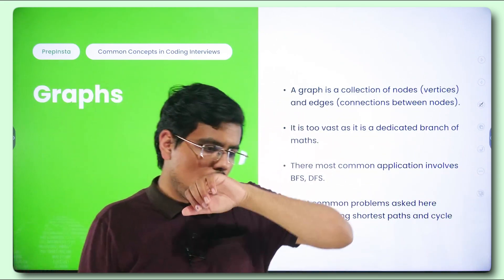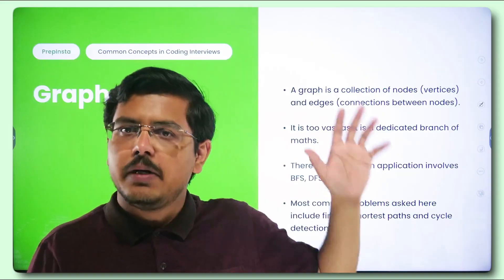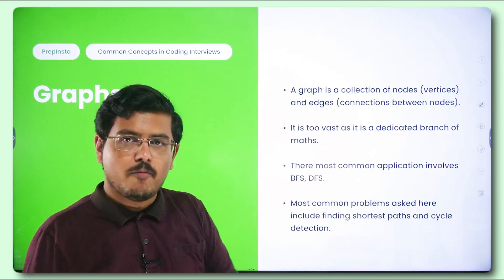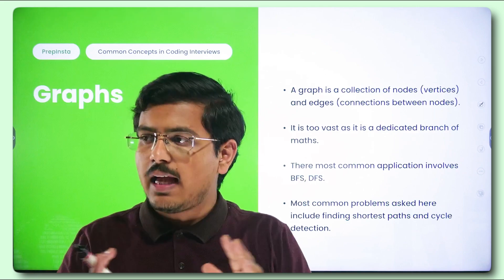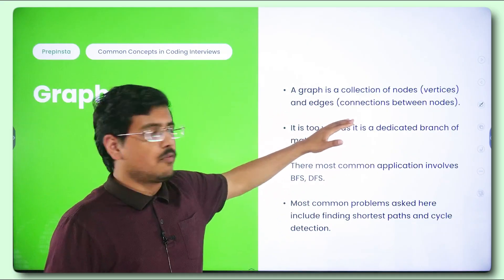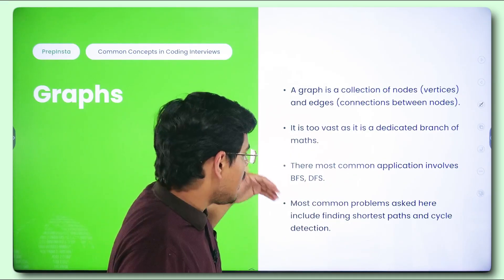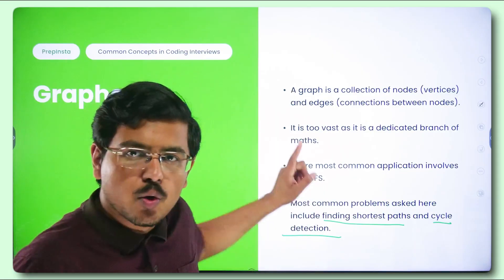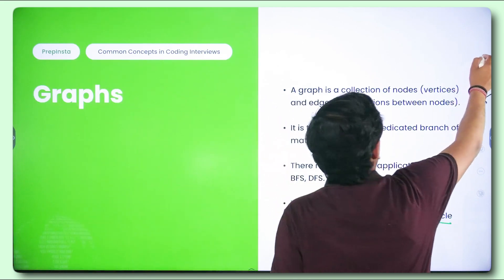Graphs are super important. This branch is very vast — even some tree concepts breed from graphs. Graphs are a collection of nodes and edges that can present themselves in n different combinations, so you need a very good understanding. Their most common applications involve BFS and DFS — breadth first search and depth first search — and the most asked problems are finding shortest paths and cycle detection, both of which you'll find in the Top 150 Not Out list.